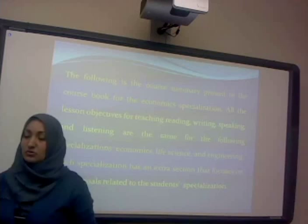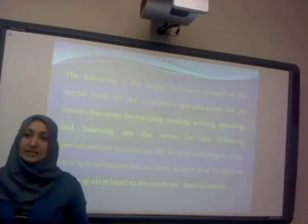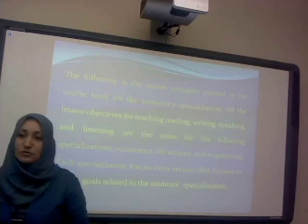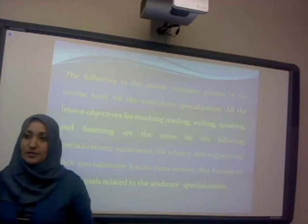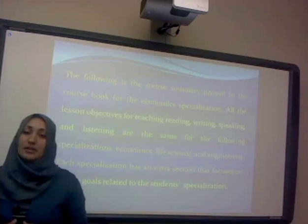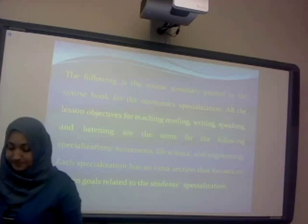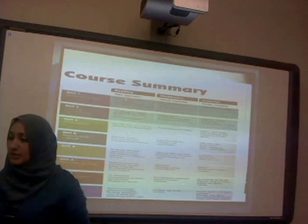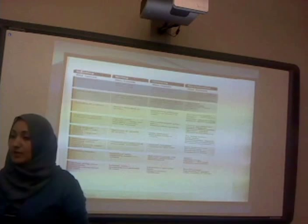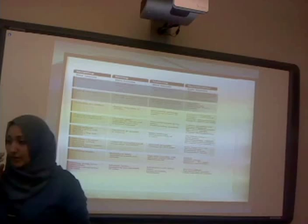In the specialized section, students are expected to have specific academic goals. For life science, goals include knowing the animal kingdom. For engineering, goals cover telecommunications. For economics, goals include knowing how to negotiate for good advice. The unit structure includes two reading lessons, vocabulary and grammar, speaking, writing, listening, and the specialization section at the end.